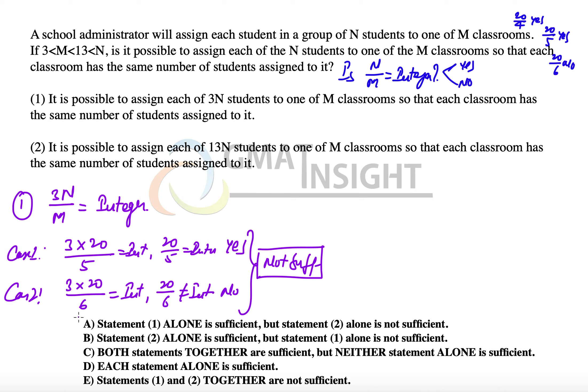Let's check the second statement. The second statement says that it is possible to assign 13N students to M classrooms so that each classroom has the same number of students assigned to it, which means 13N upon M is definitely an integer. But the question is, can we do the same experiment that we did in the first statement?